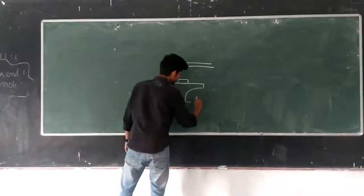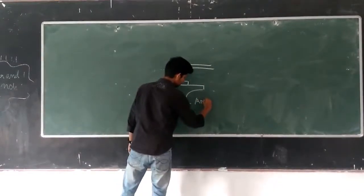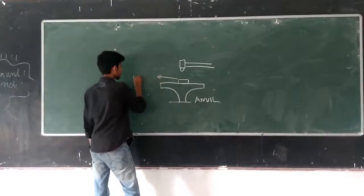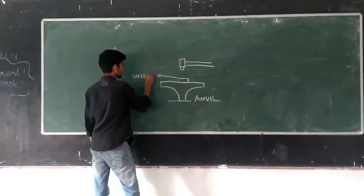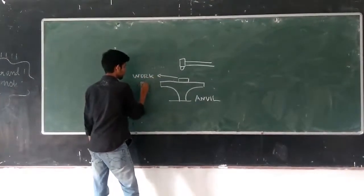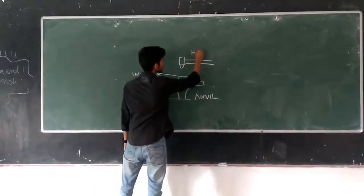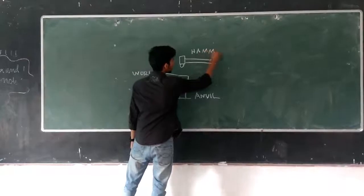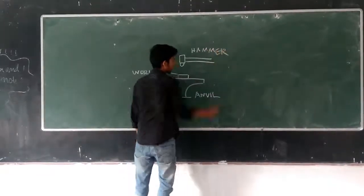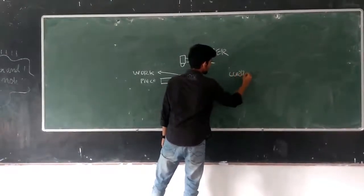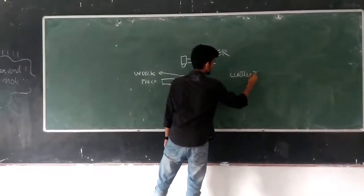This is a hammer. This is workpiece. Hammer. The last one is current pulsate or current pulse.